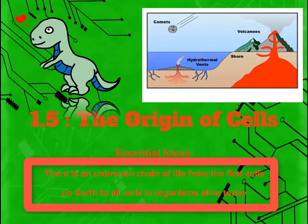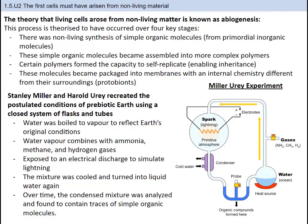The essential idea here is that there is an unbroken chain of life from the first cells on Earth to all cells and organisms alive today. One of the common areas of thought is that the first cells must have arisen from nonliving material. This theory is called abiogenesis — genesis being the beginning, and abio meaning nonliving.